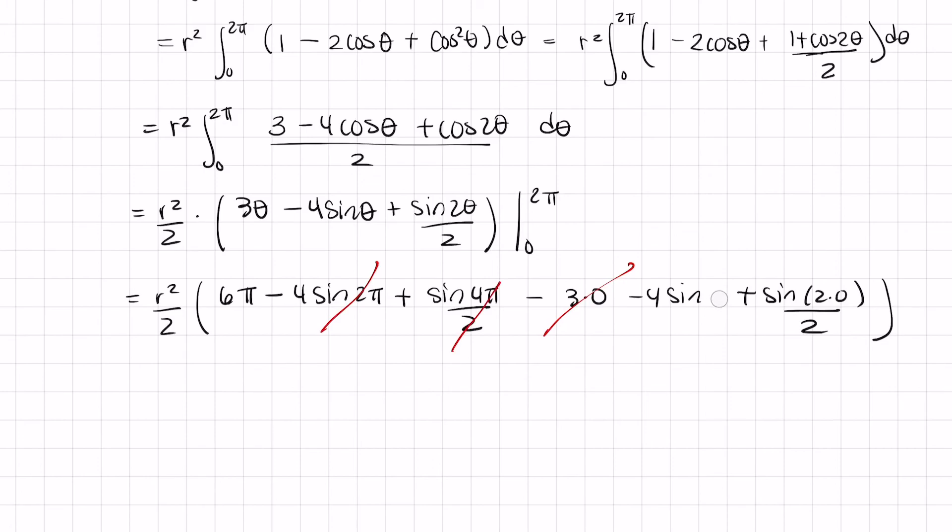I wrote 0 as theta, so that's a 0. Sine of 0 is just 0, and that's 0. So we just end up with R squared times 6 pi over 2 equals 3 pi R squared.